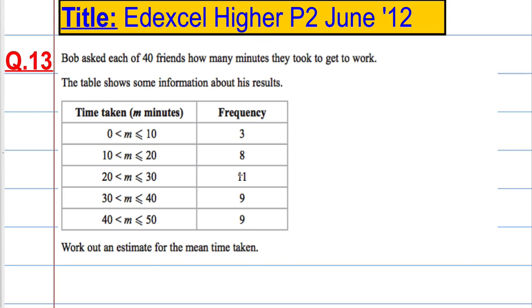In question 13, we're told that Bob asked each of 40 friends how many minutes they took to get to work. He's got a table of results and he's grouped the data, so there's 3 people who take between 0 and 10 minutes to get to work, 8 people take between 10 and 20 minutes, and so on.